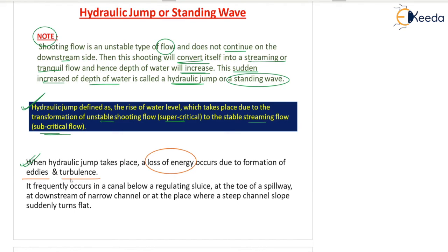Whenever there is a hydraulic jump there will be loss of energy. It frequently occurs in canal flow below a regulating sluice, at the toe of the spillway, at the downstream of a narrow channel, or at a place where a steep channel slope suddenly turns flat.